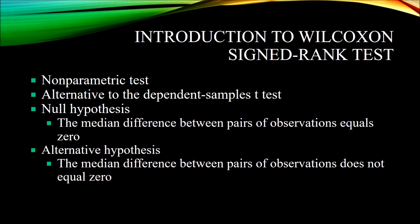The null hypothesis in a Wilcoxon Signed Rank Test is that the median difference between the pairs of observations equals zero. The alternative hypothesis is that the median difference does not equal zero. It's important to note that because the Wilcoxon Signed Rank Test is a popular non-parametric alternative to the paired samples t-test, the null hypothesis for that test is that the mean difference between pairs of observations equals zero. So the paired samples t-test looks at the mean difference, and the Wilcoxon Signed Rank Test looks at the median difference.